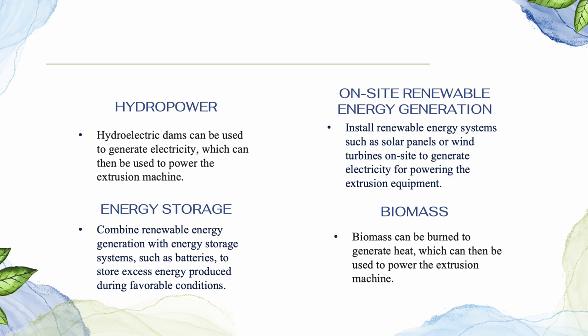Third, by energy storage, which combines renewable energy generation with energy storage systems such as batteries to store excess energy produced during favorable conditions. The stored energy can be used during periods of low renewable energy generation or high energy demand. Last but not least, by biomass. Biomass can be burned to generate heat, which can then be used to power the extrusion process. This is a renewable source of energy that can help to reduce emissions. By adopting these approaches, manufacturers can shift toward a more sustainable and renewable energy-powered extrusion process.